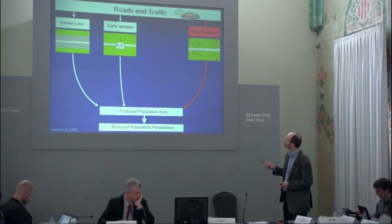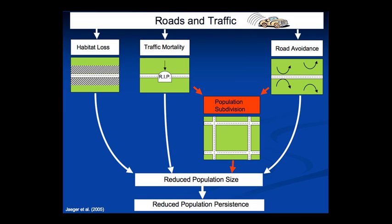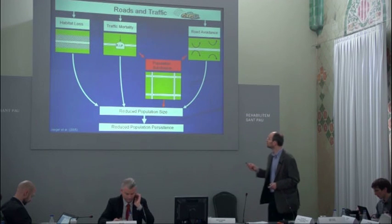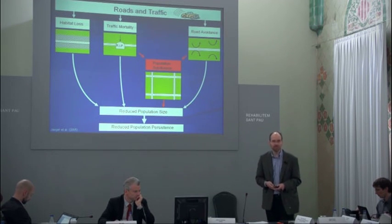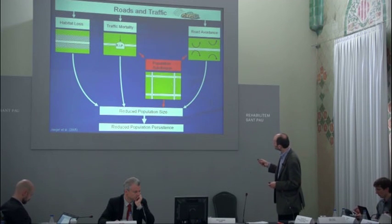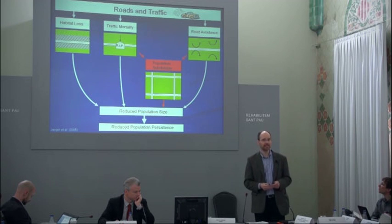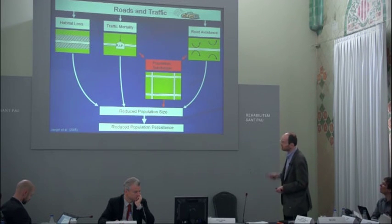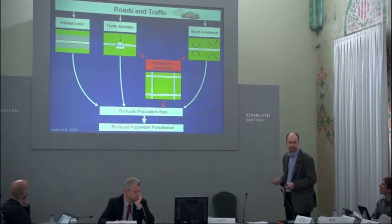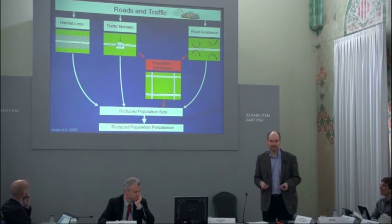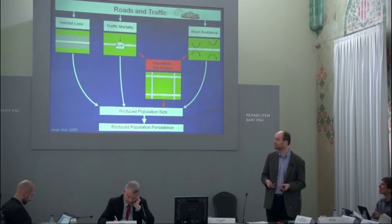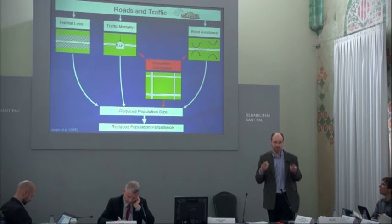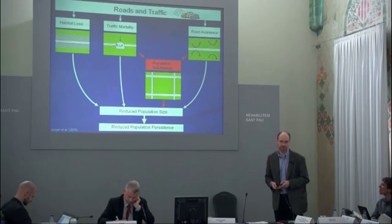When you combine traffic mortality and road avoidance, you get population subdivision — the landscape is divided into smaller patches. The problem is that when roads act as barriers, empty habitat patches cannot be recolonized. Small populations in smaller patches fluctuate more and can easily go extinct. High-quality habitat that is inaccessible becomes effectively lost habitat, and habitat loss is the biggest cause of species extinction.